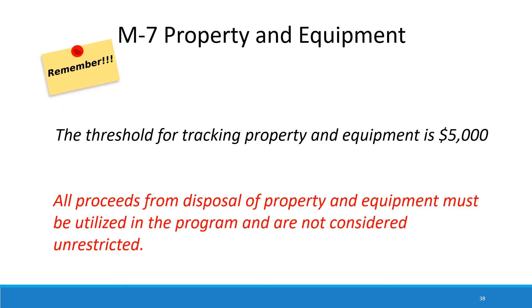An important reminder is that property and equipment are part of the assets of your organization, and we recommend that the ultimate responsibility for tracking them reside in your fiscal department. We would also like to remind you that the threshold for tracking property and equipment is $5,000, and all proceeds from disposal must be utilized in the program and are not considered unrestricted.